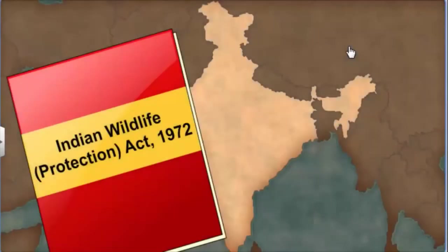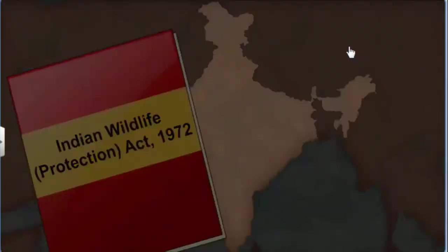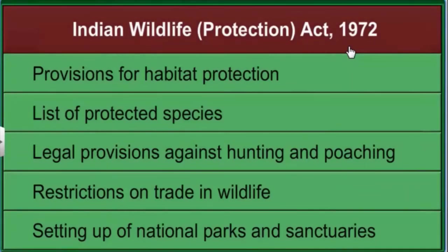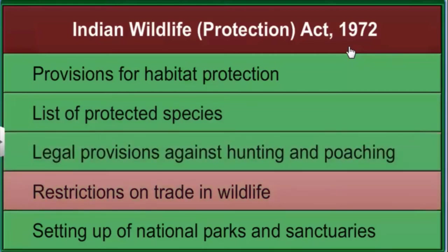Conservation efforts in India started gaining momentum in the 1960s, resulting in the implementation of the Indian Wildlife Protection Act of 1972. The salient features of this Act included making provisions for habitat protection, publishing a list of protected species, imposing legal restrictions on hunting and poaching, and trade in wildlife, and setting up national parks and sanctuaries in different parts of India by giving legal protection to the habitat.